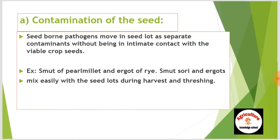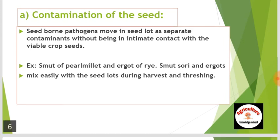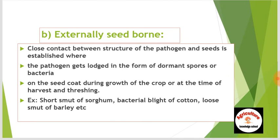Seed-borne pathogens move in the seed load as separate contaminants without being in intimate contact with the viable crop seeds. For example, smut of pearl millet and ergot of raya. Smut spores and ergots mix easily with the seed loads during harvest and threshing. In externally seed-borne cases, close contact between the pathogen structure and seed is established where the pathogen gets lodged as dormant spores or bacteria on the seed coat during crop growth or at harvest and threshing.